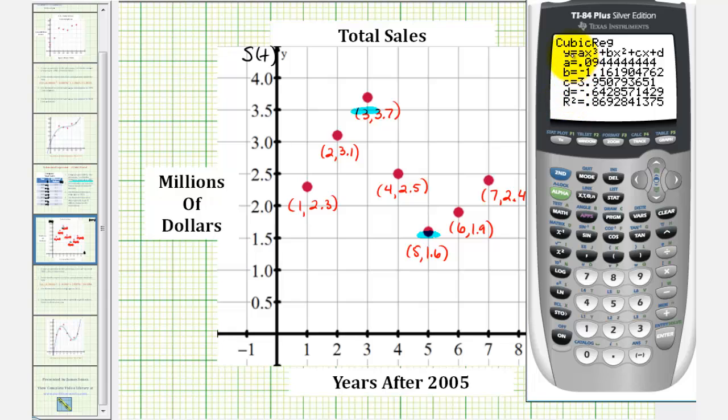So here's our equation, where they're giving us the coefficients a, b, c, and d for the cubic function in this form here. Remember, we're using t instead of x, and s of t instead of y. Also notice r squared is approximately 0.869. The closer this value is to one, the better the fit. So this is a decent model, but it could be better. Now let's go back to our questions.